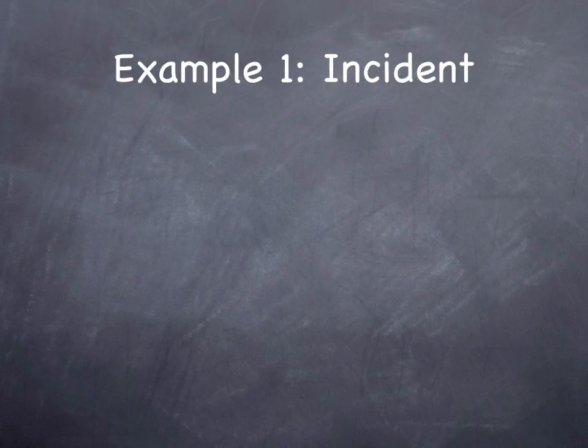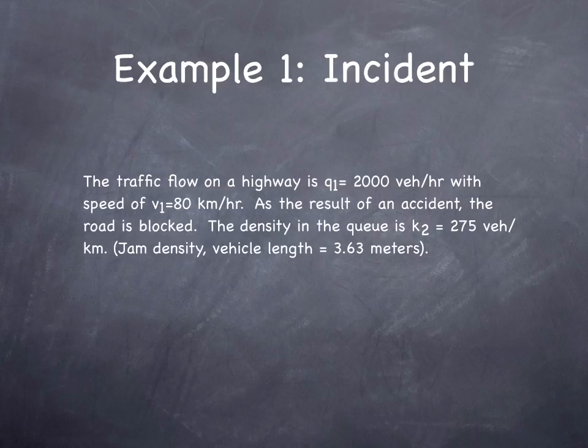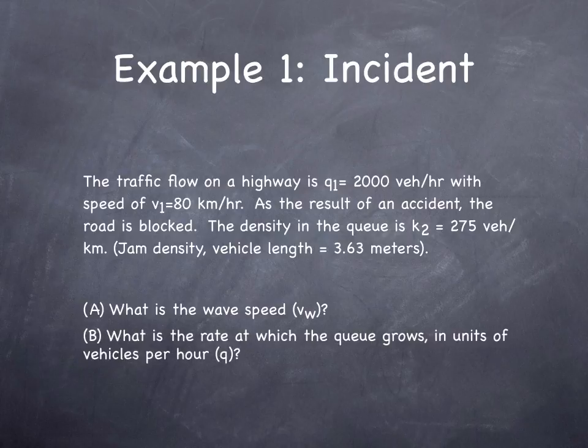Here's a problem. Traffic flow on a highway denoted as Q sub 1 equals 2,000 vehicles per hour. Vehicles are driving at a speed of 80 kilometers an hour. As a result of a crash, the road is blocked. The density in the queue is 275 vehicles per kilometer, which is very, very high. We're assuming vehicle lengths of 3.63 meters. The question is, what is the wave speed, and what is the rate at which the queue grows in units of vehicles per hour? So remember, Q equals K times V. V sub W equals delta Q over delta K.